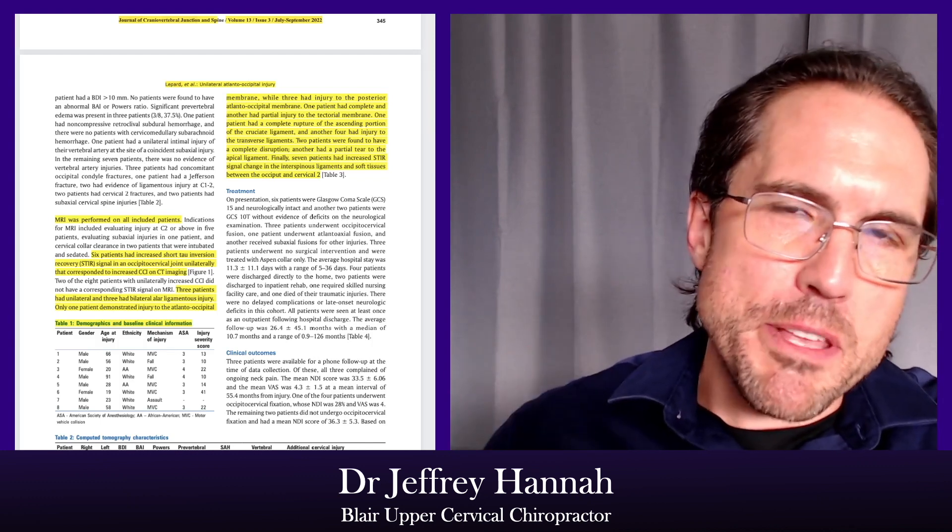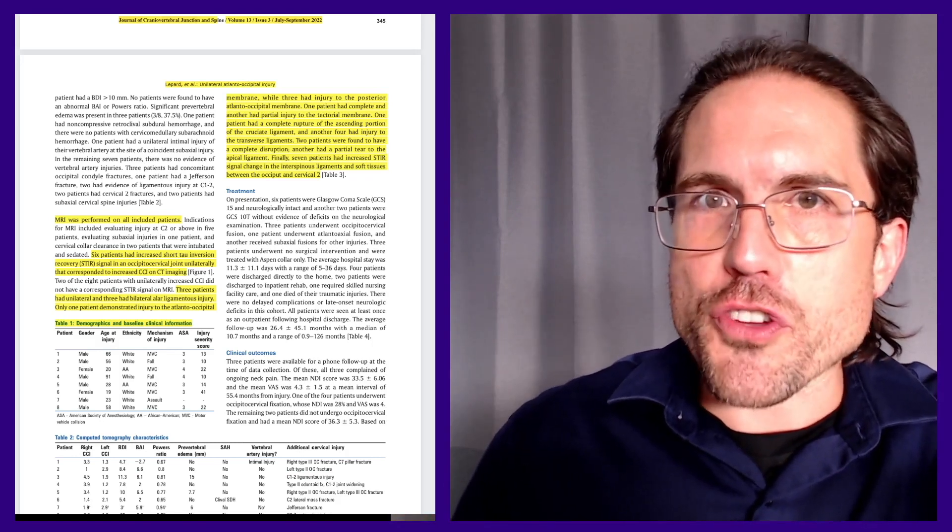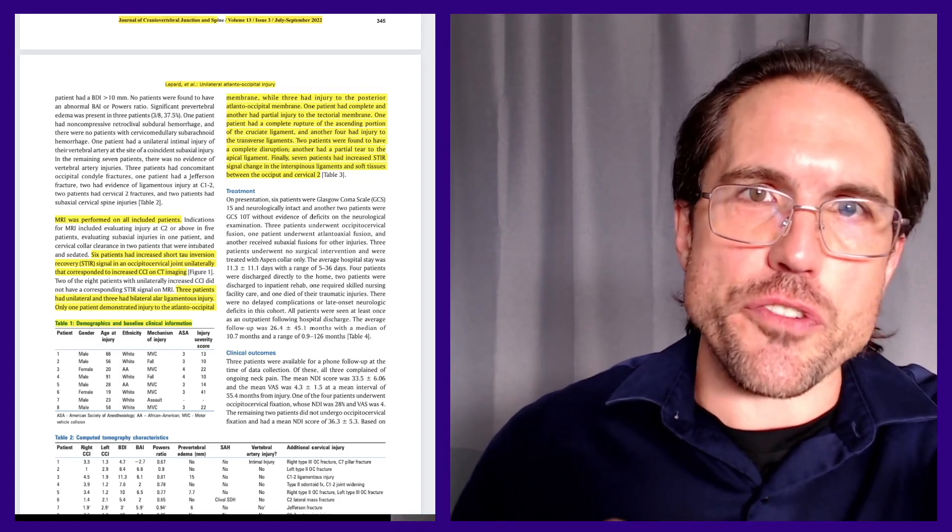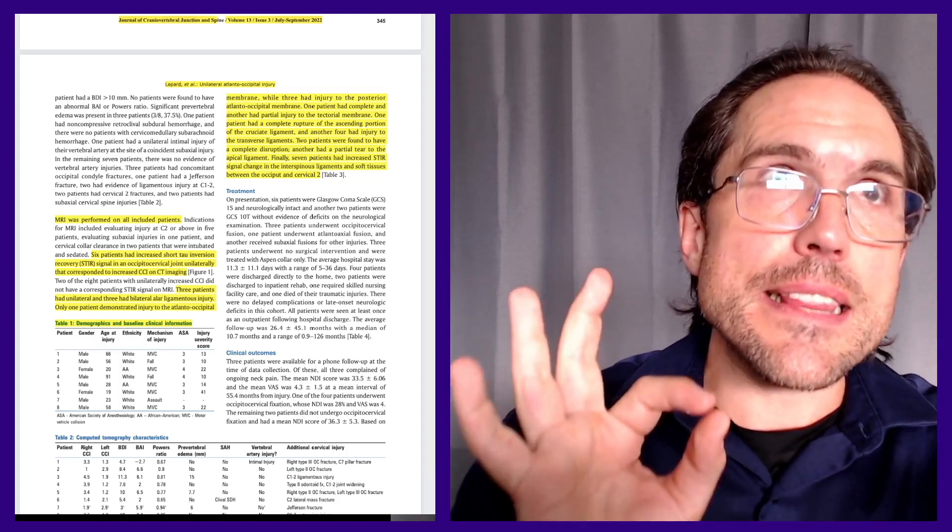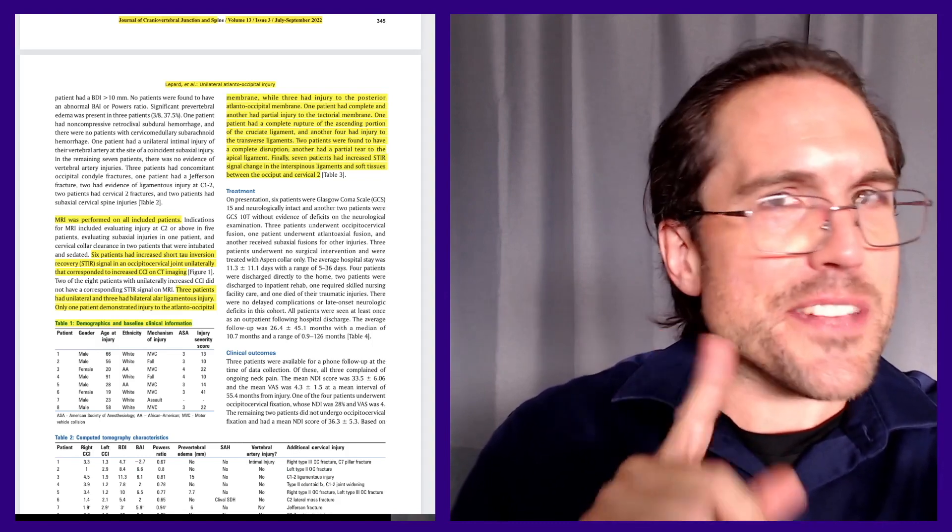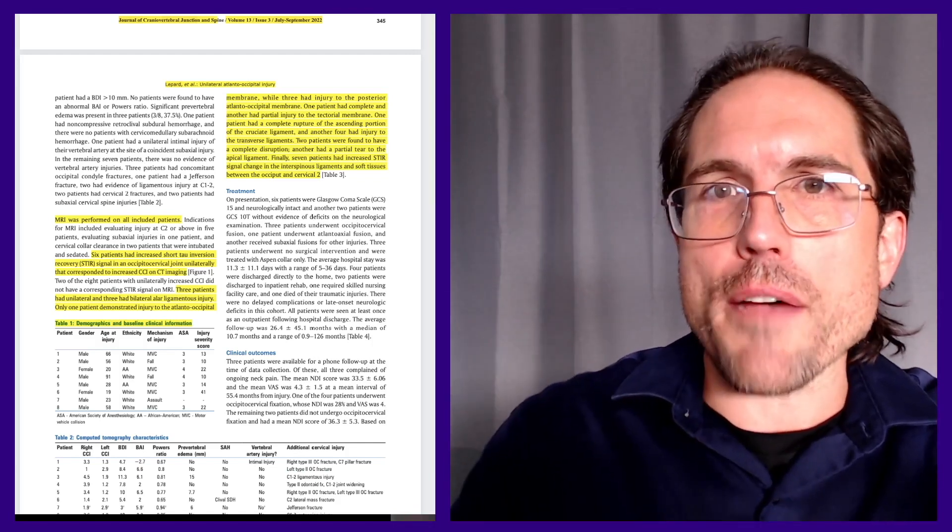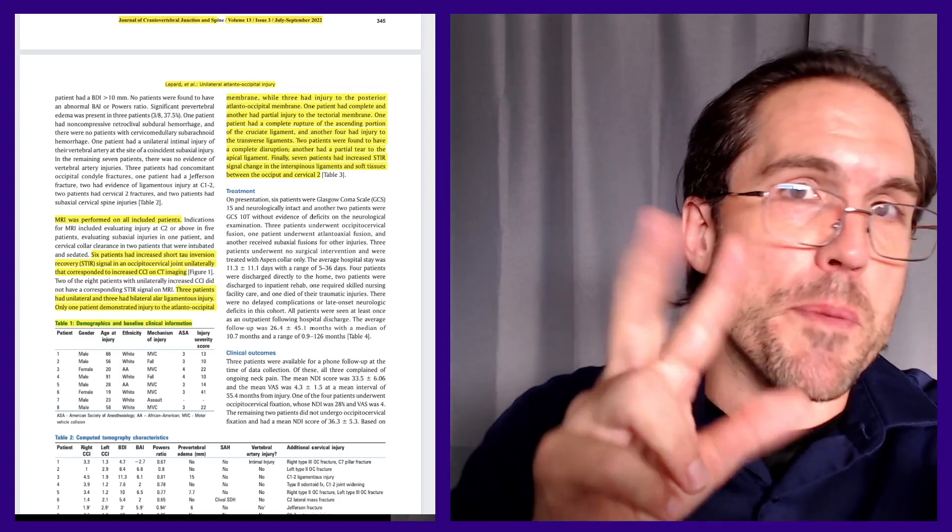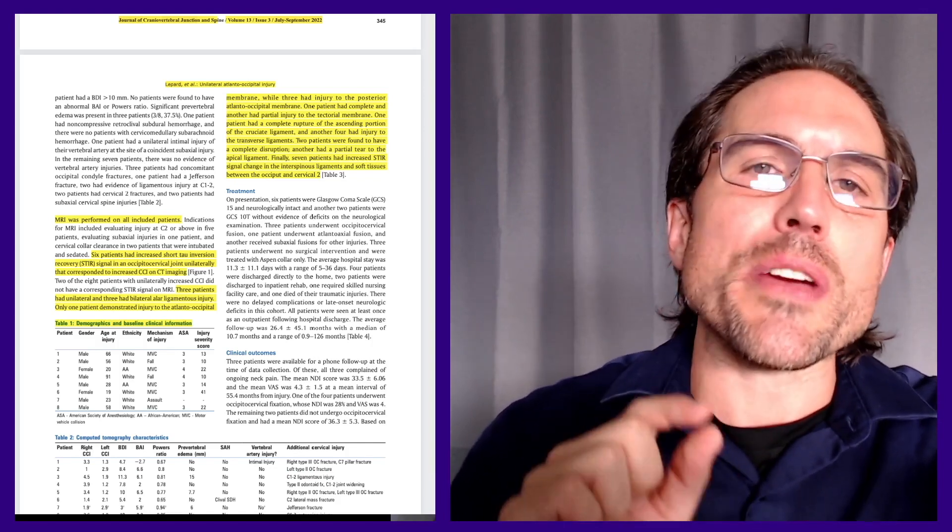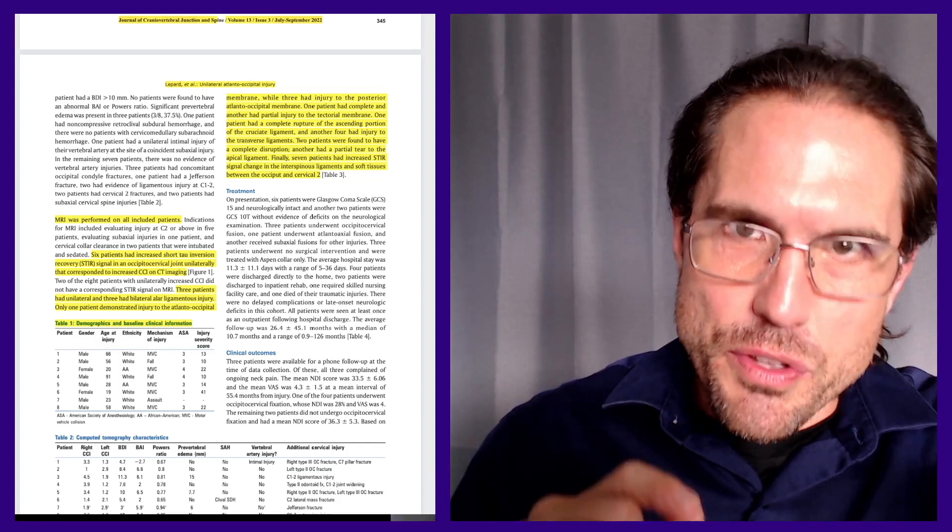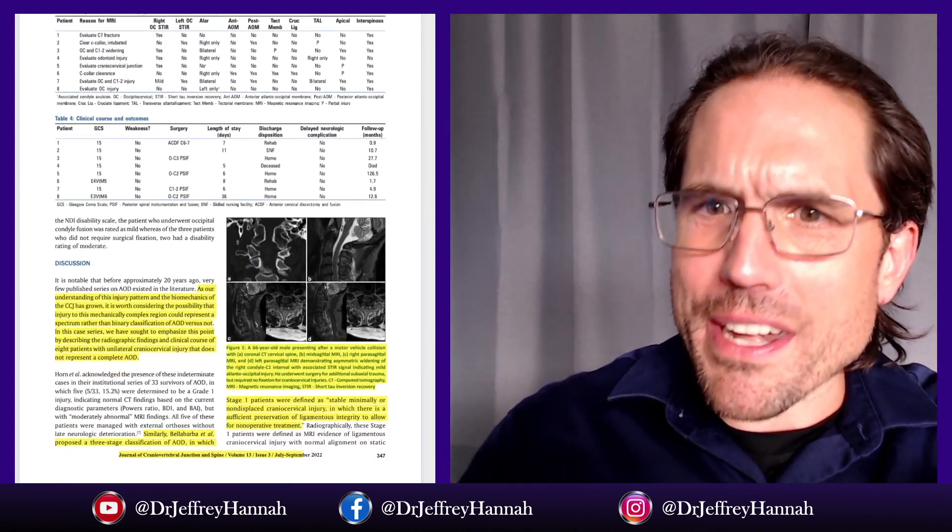Curiously, often this upper part of the neck does not go properly reported. A lot of standard MRIs that I see in my own practice, if they're looking at the skull, they stop at the level just before C1. If they're looking at the neck, they stop just at the level of C2. So this critical juncture, oftentimes, does not even go visualized in the first place.